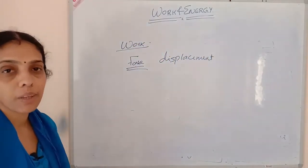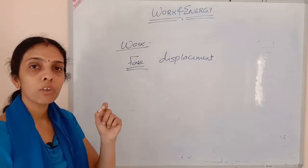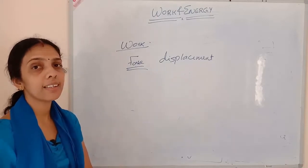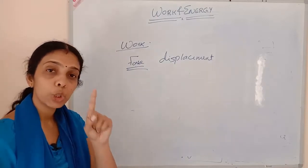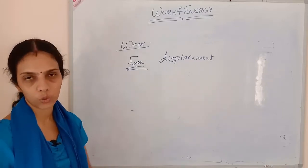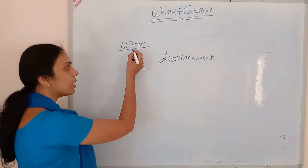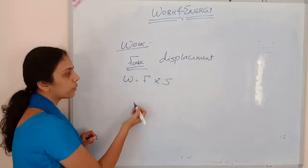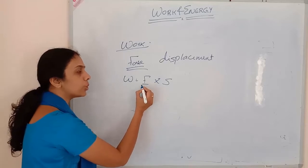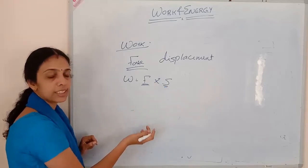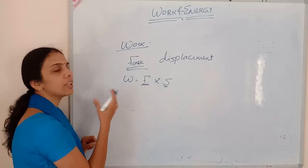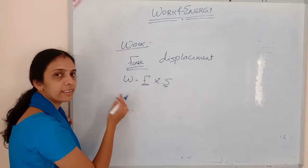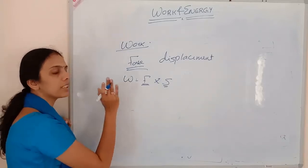Work done is equal to the product of force and displacement. One condition is there: displacement should happen in the direction of force. So work done is the product of force and displacement, and the force should act in the direction of displacement. Then only we can say work is done. If that is not the case, then we can't consider the work as done.